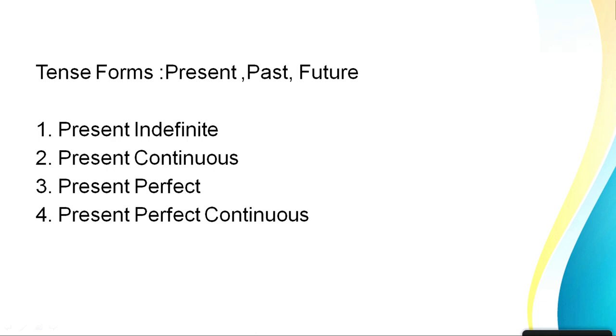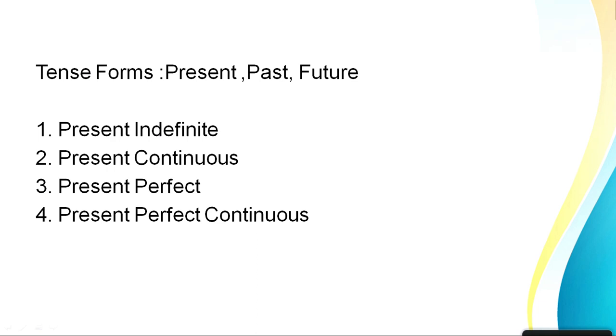Present perfect is used for something that has just been completed very recently — that's why it's not past tense. Present perfect continuous marks a moment in time when an action was going on at that moment. We'll cover these one by one.